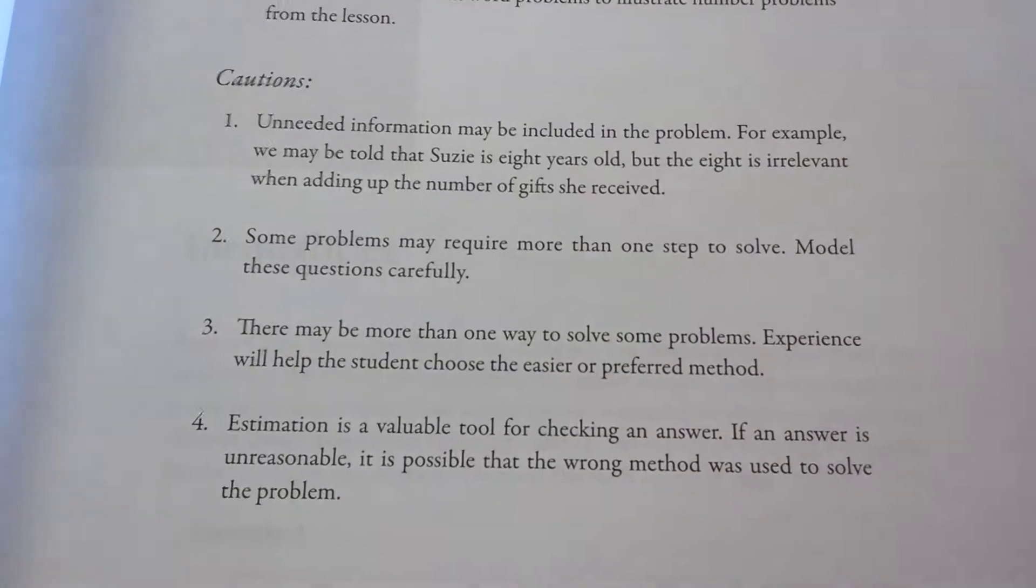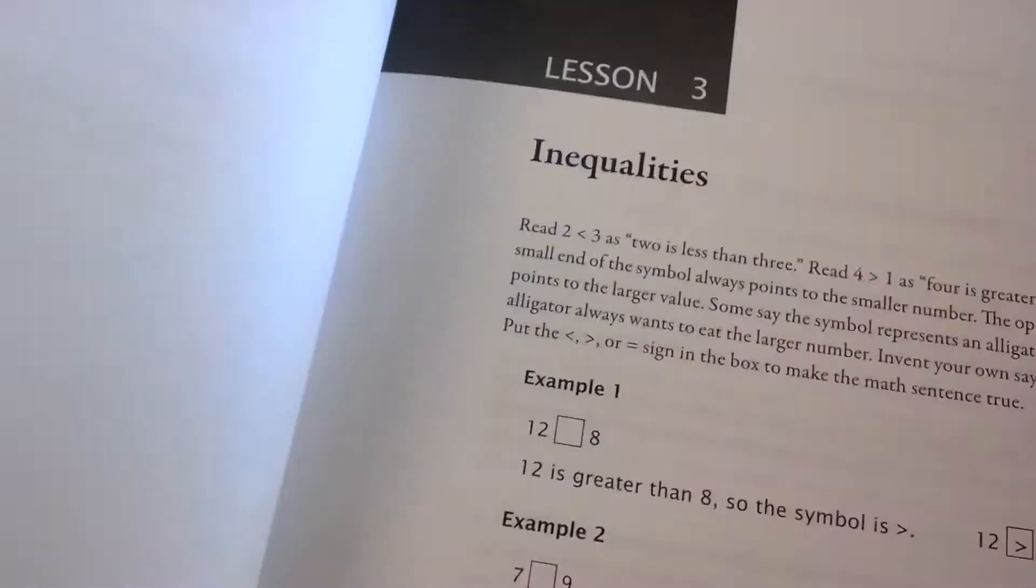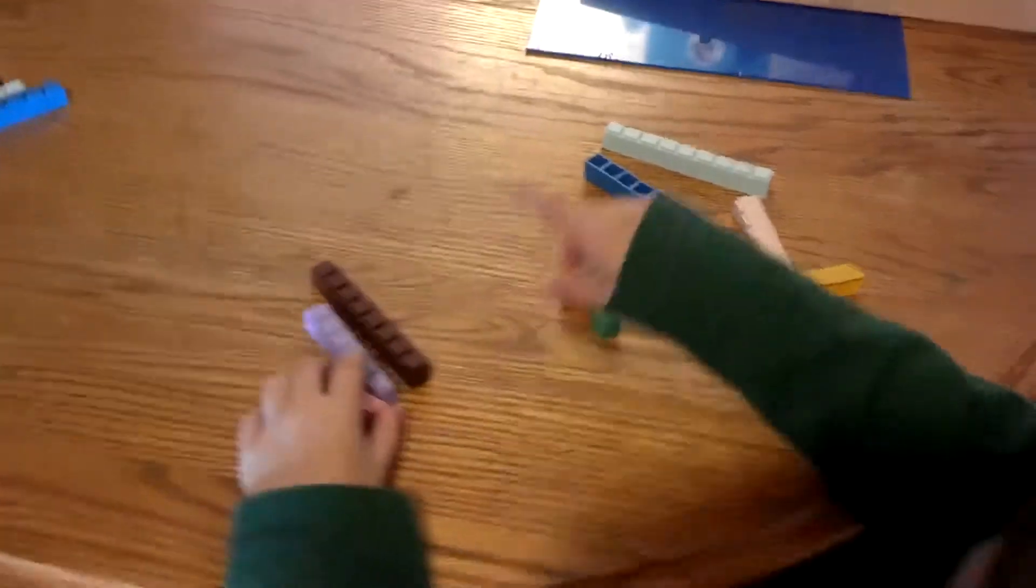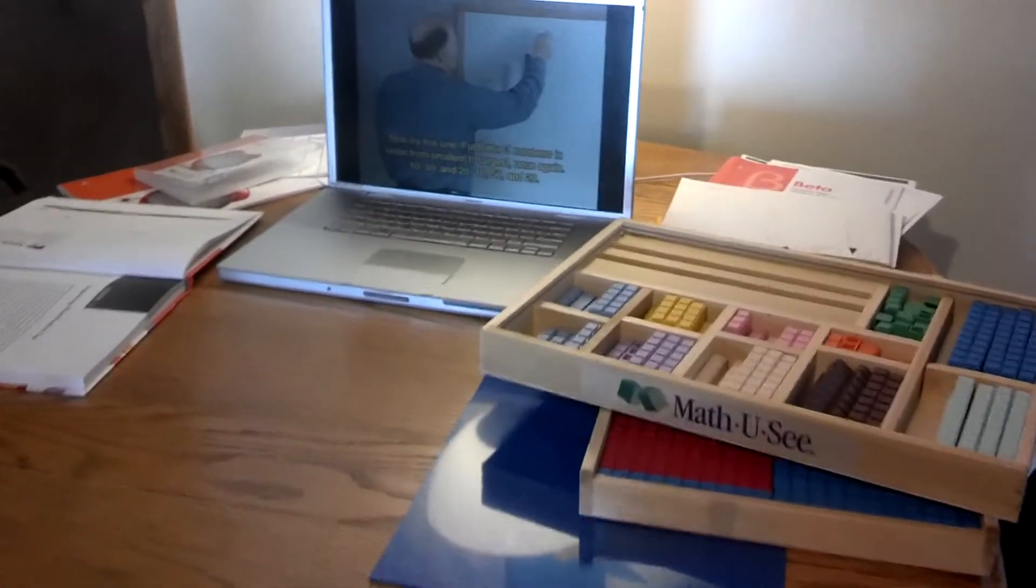Three, six, and eight. Okay, now try this one. Put these three numbers in order from smallest to largest. Once again, 10, 50, and 20. 10, 50, and 20.